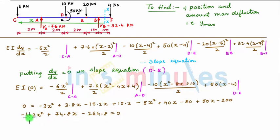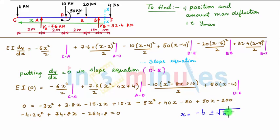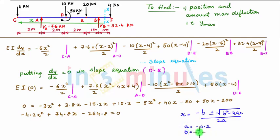This is a quadratic equation. The roots are given by the formula x = (−b ± √(b² − 4ac)) / 2a. In this equation, a = −4.2, b = +74.8, and c = −264.8.